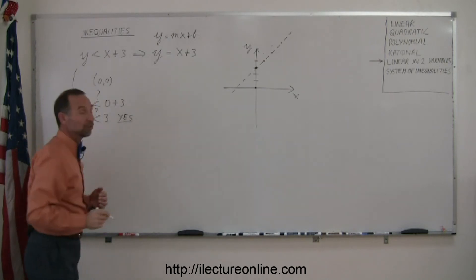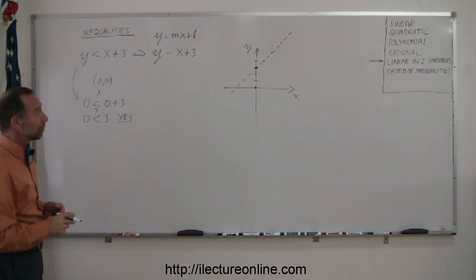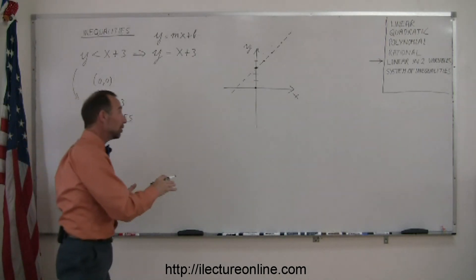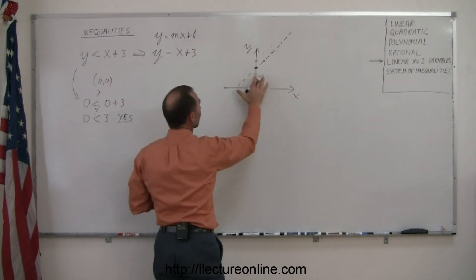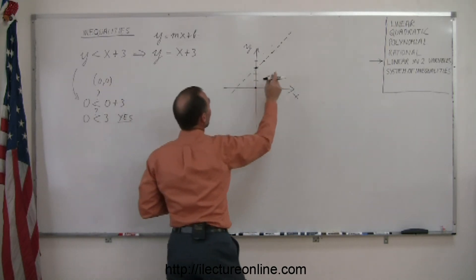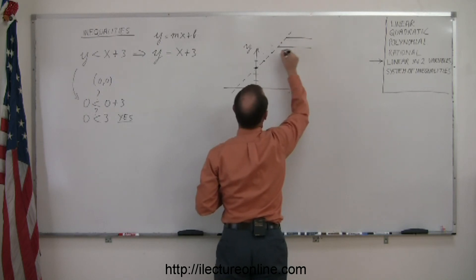While simplifying it, you can see that 0 less than 3 is indeed a true statement. So yes, that's true, which means that the point I picked is part of the solution, part of the region that satisfies the inequality. Since it's to the right of the line, we're going to shade that portion in.